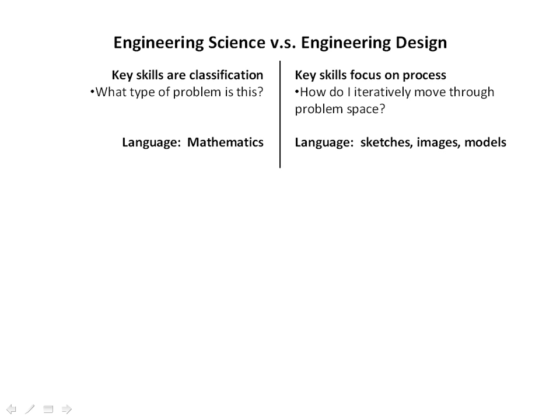Let's quickly review engineering science versus engineering design. In engineering science, a key skill is classification — what type of problem is it — and the language we use is mathematics. In engineering design, the key skills focus on process: how do I iteratively move through the problem space using the most efficient process? And the language we use is sketches, images, and models — things very different from the analytical mathematics taught in the engineering science domain.